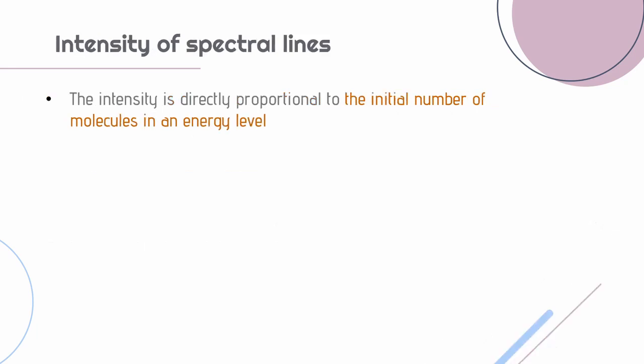The intensity of a spectral line is directly proportional to the initial number of molecules in an energy level. The initial number of molecules in an energy level or population is directly proportional to 2J plus 1 times the exponential you see here.